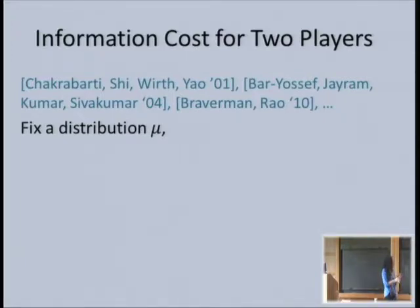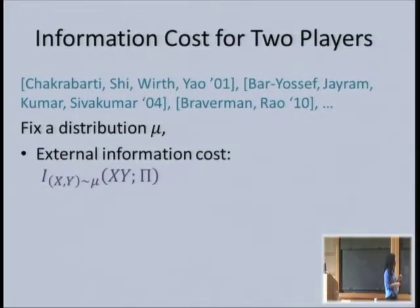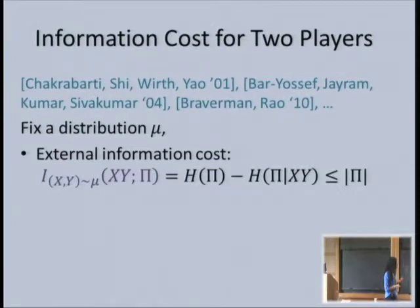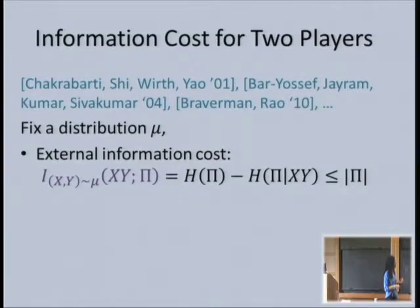The idea is to fix a hard distribution μ. You define the information cost of a protocol in one of two ways. The external information cost is what an external observer who gets to see the transcript π learns about the inputs when they're drawn from distribution μ. This is interesting because mutual information is never more than the entropy of the transcript, and entropy of the transcript is never more than the length. So a lower bound on external information immediately gives a lower bound on communication.